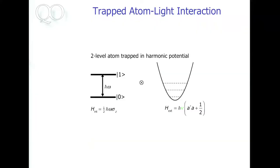We looked at our qubit states — a two-level system like a spin one-half. These qubits are confined in a harmonic oscillator potential. Then we shine in radiation, which has a frequency, linear momentum, detuning, and intensity. These parameters you can use in a proper way to control this interaction. That's what we saw yesterday.